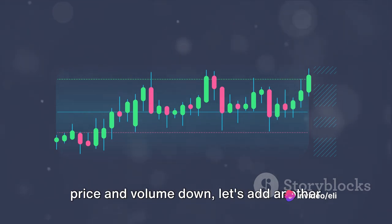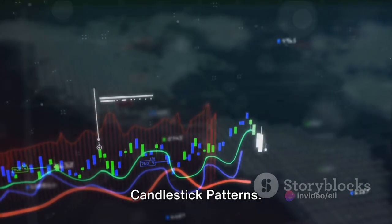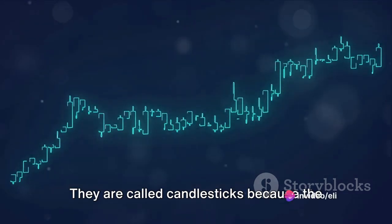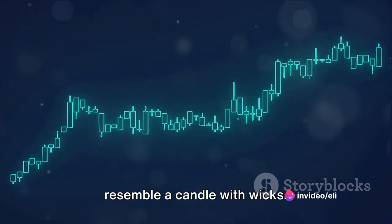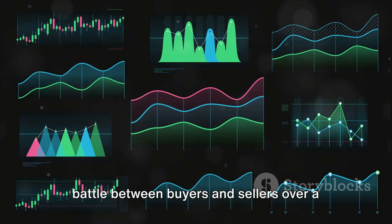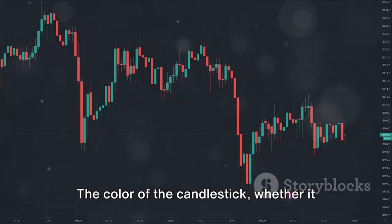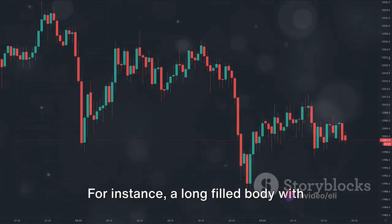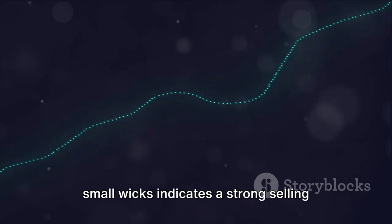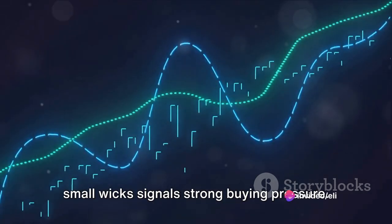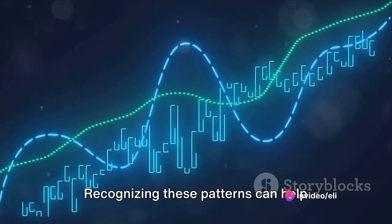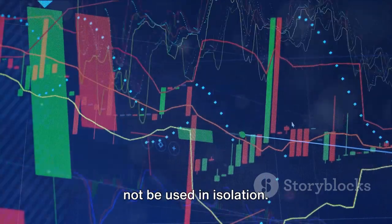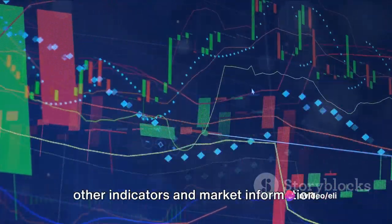Now that we've got the basics of price and volume down, let's add another layer to our chart reading skills: the candlestick patterns. Candlestick patterns are visual representations of price movements during a specified time period. They are called candlesticks because the rectangular shape and lines on either end resemble a candle with wicks. Each candlestick tells a story of the battle between buyers and sellers over a given period. The color of the candlestick, whether it is filled or hollow, the length of the body, and the length of the wicks all provide clues about the sentiment of the market during that time period. For instance, a long filled body with small wicks indicates strong selling pressure, while a long hollow body with small wicks signals strong buying pressure. Recognizing these patterns can help predict potential price movements. But remember, like any other technical analysis tool, candlestick patterns should not be used in isolation.